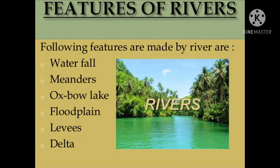Let's talk about the work of a river. A river forms different types of features on the earth, such as waterfall, meanders, oxbow lake, floodplain, levees, delta, etc.